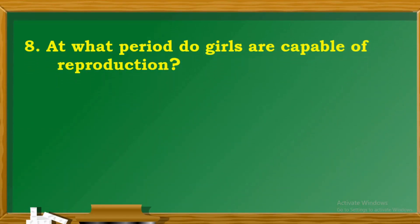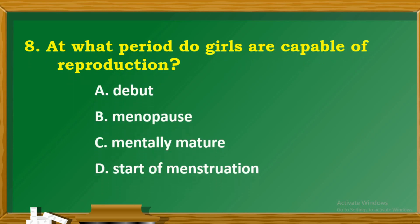Question 8: At what period are girls capable of reproduction? A. Debut. B. Menopause. C. Mentally mature. D. Start of menstruation.